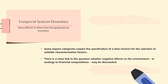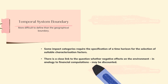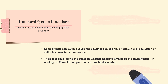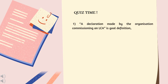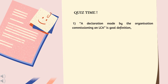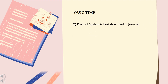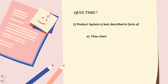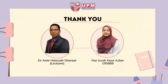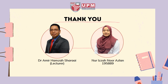I hope you guys understand what I have shared with you. And now I want to test you guys, just like I said at the beginning of the video, because now is quiz time. Okay, first one: a declaration made by the organization commissioning an LCA is the goal definition — true or false? Yes, you are right, it is true. Next, is the product system best described in the form of a flowchart or mind map? Yes, you are right — the product system is best described in the form of a flowchart. This is the end of this video. Thank you for your attention and for watching this video. We will continue this chapter in the next video. Till we meet again — bye and have a good day everyone.